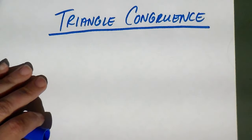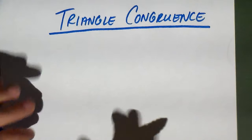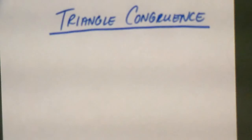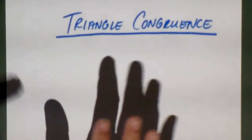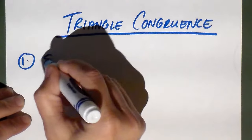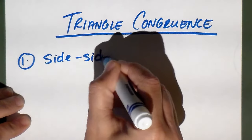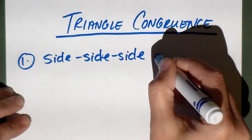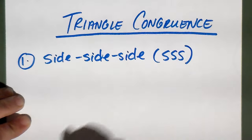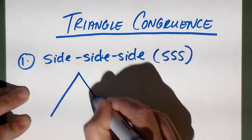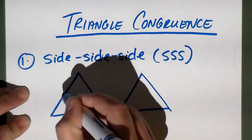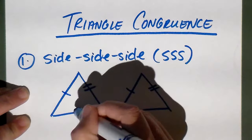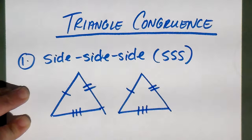We're going to look at triangle congruence, specifically the ones we haven't talked about in class yet. We've actually talked about two in class. The first one is side-side-side congruence, abbreviated SSS. Side-side-side congruence is when we have two triangles and we're able to prove that all three sides are congruent.